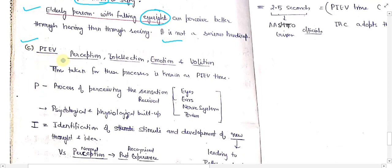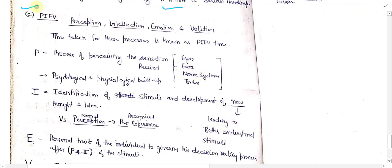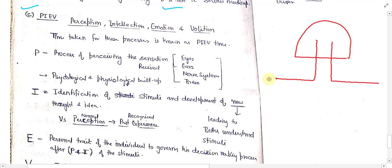Under psychological factors, PIEV theory applies: P stands for Perception, I for Intellection, E for Emotion, and V for Volition. All four activities are related to the brain. In diagram form, at the first point perception takes place, then inside the brain there are two activities — intellection and emotion — and finally the brain gives a final message to the body as a response.